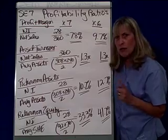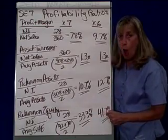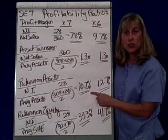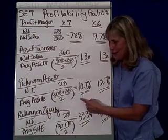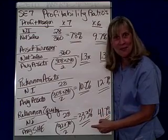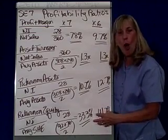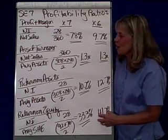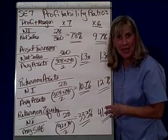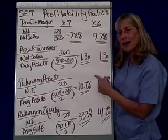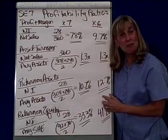Notice that the return on equity percentages will always be higher than the return on assets percentages. Why? The denominators are smaller for stockholder's equity, so these percentages will always be greater. So when somebody says to you, what kind of return are you getting? Ask them: are you talking about return on assets or return on equity? It makes a difference.